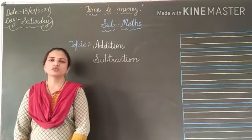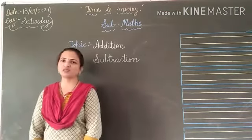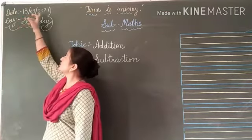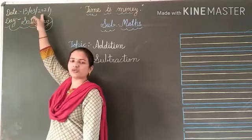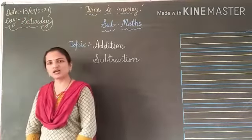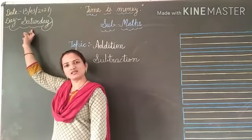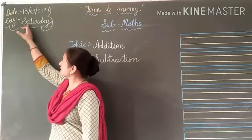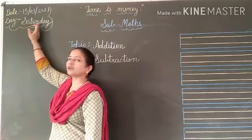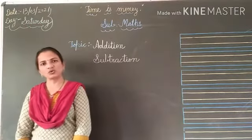So students, do you know which day is today? 13 March 2021. And which day is today? Saturday — S-A-T-U-R-D-A-Y — Saturday. Okay, students?